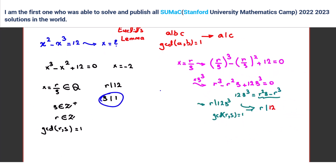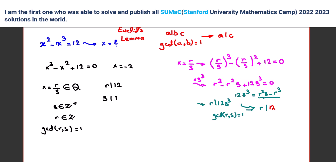Now let's prove s divides 1. By the same approach: s divides the second term, s divides the third term, so s divides r³. We know gcd(r,s) = 1, so by Euclid's lemma, s divides 1. So we've proved: s divides the leading coefficient, and r divides the constant term.